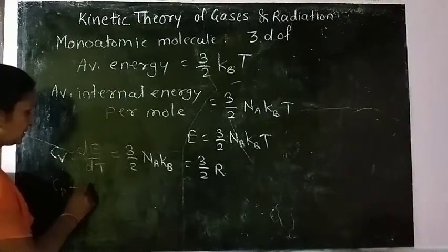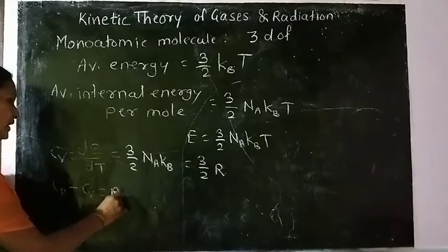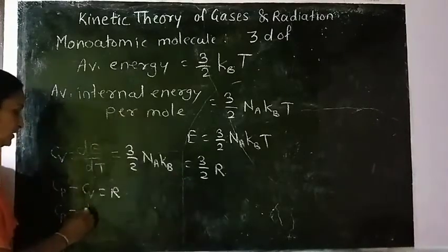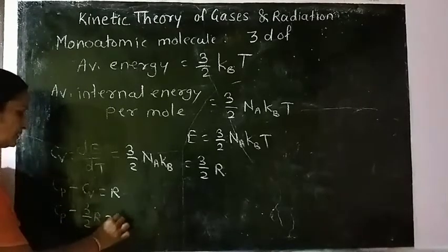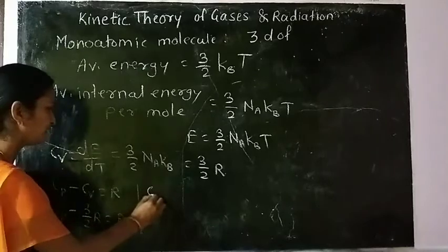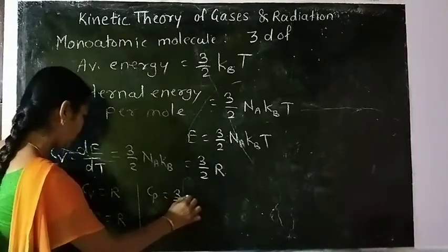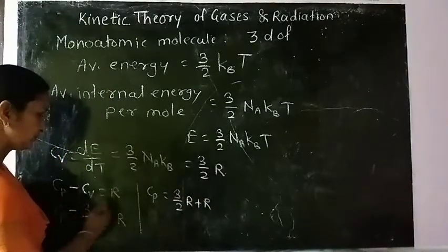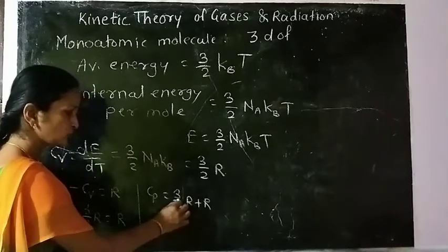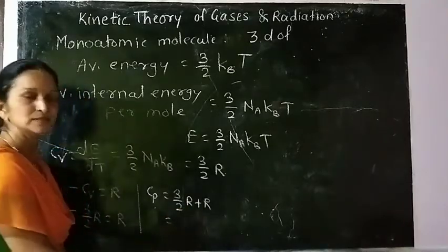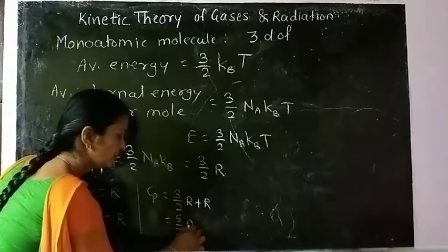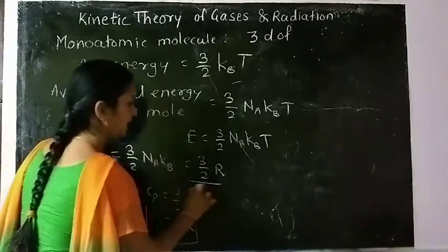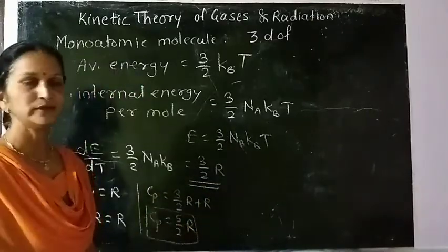Using Mayer's relation, C_P minus C_V equals R. Since C_V = 3/2 R, we get C_P = 3/2 R + R = 5/2 R. So C_P = 5/2 R and C_V = 3/2 R.